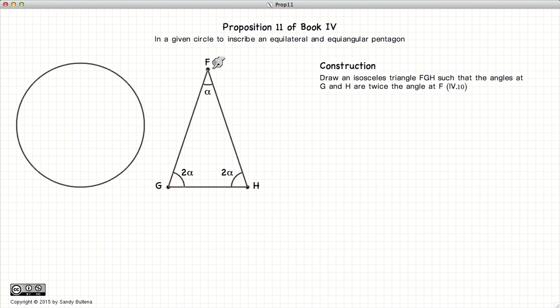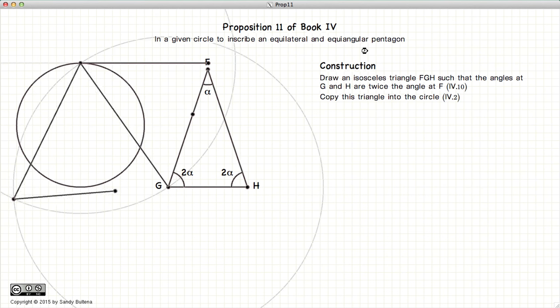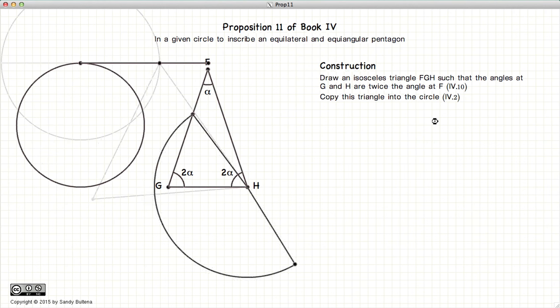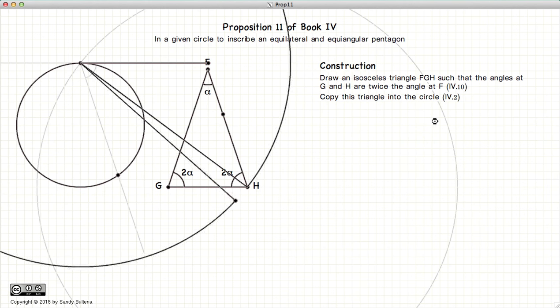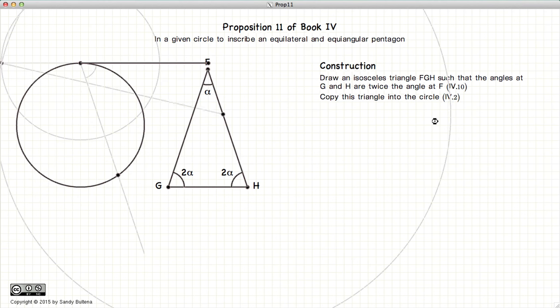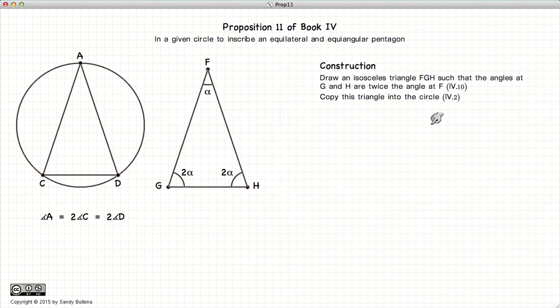Now we take this triangle and we copy it inside the circle, based on the Proposition 2 of this book. It takes a bit of time, there we go.